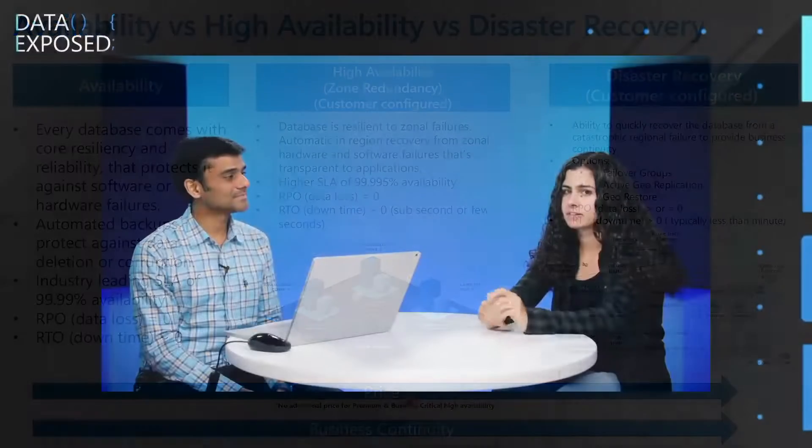So if I just summarize what I learned: availability just comes with the service. But if you need high availability, that's something as a customer you should configure, and the way we do that is with zone redundancy — not zone redundancy of the backup, zone redundancy of the database. And then the third thing is disaster recovery, which is customer-configured and includes geo-replication and failover groups. It's basically spanning geos. Exactly.